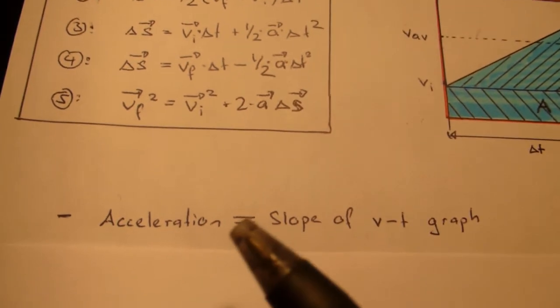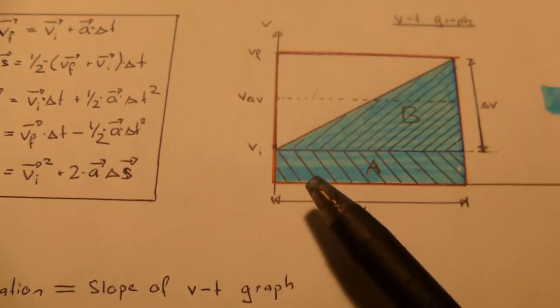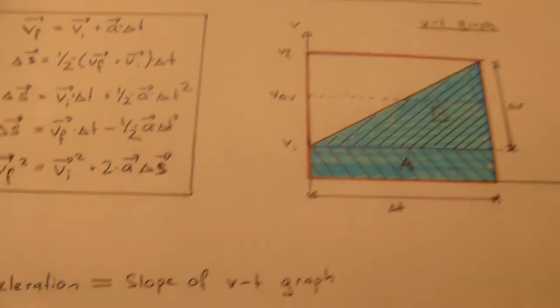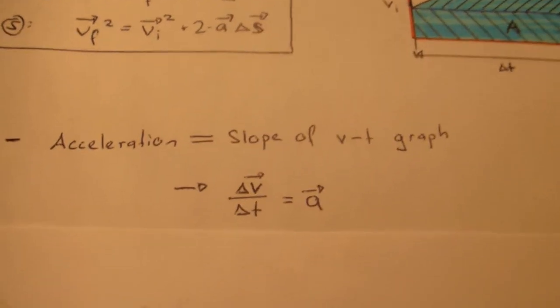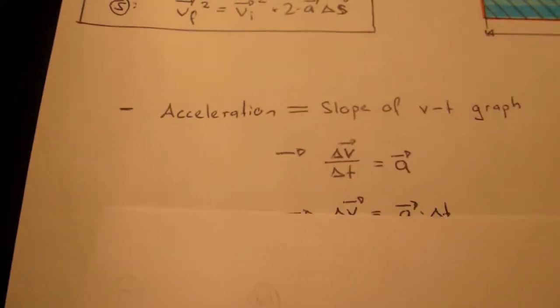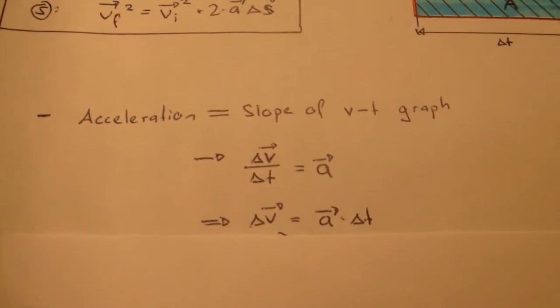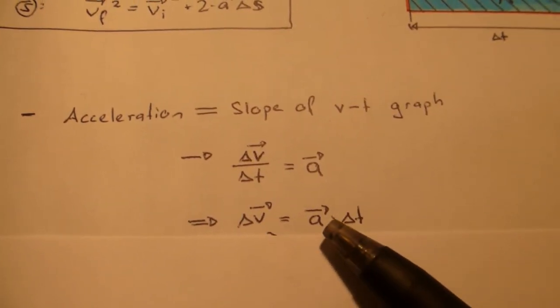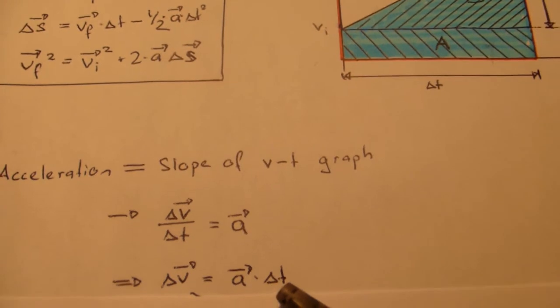First of all, we know that acceleration is the slope of the V-t graph. Therefore, change in velocity is acceleration times the change in time.